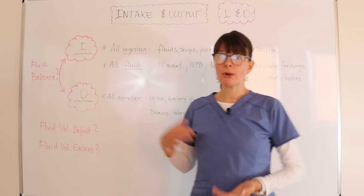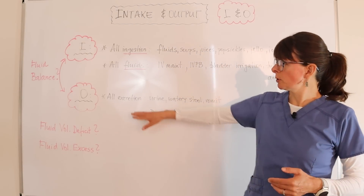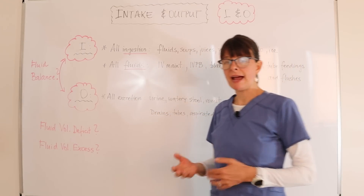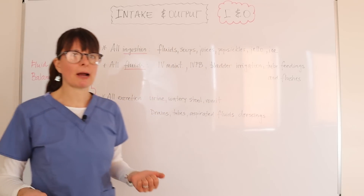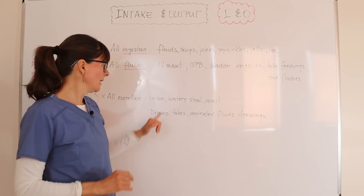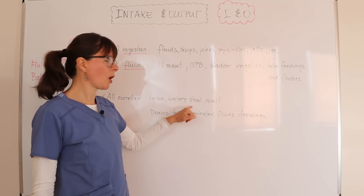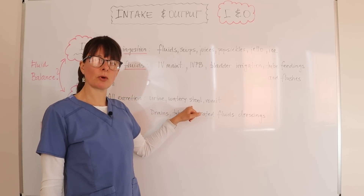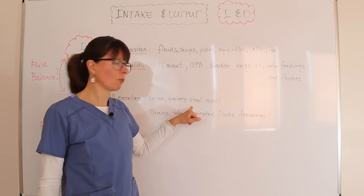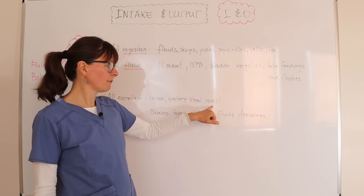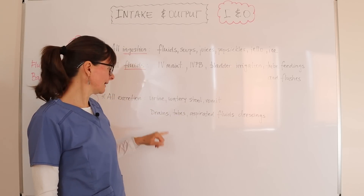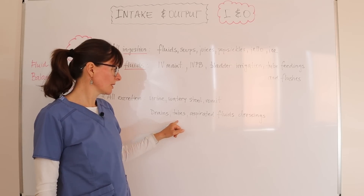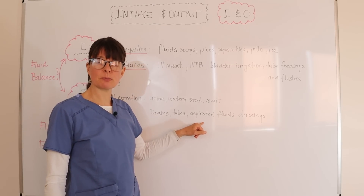On the other side, we have the output. The output includes all excretion that the patient is having. Usually we think about urine and stool — urine and any watery stool. Formed stool does not need to be recorded here; that usually just goes in the bowel movement category. But vomit, for example, and then any output from any drains, tubes, or any fluid that gets aspirated.